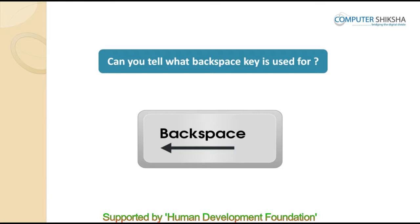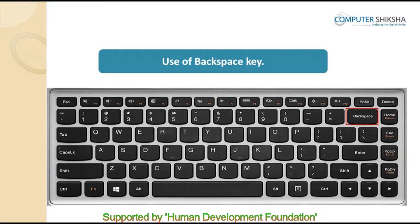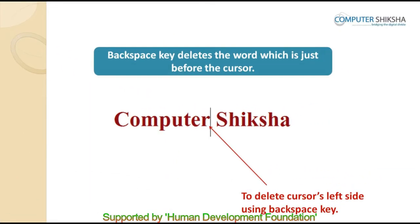Can you tell what the backspace key is used for while typing? The backspace key is used to erase or delete anything that we have typed by mistake. While typing a sentence, we all tend to make some mistake. To erase a wrongly typed word or alphabet, we keep our cursor such that the mistaken word is on the left side of the cursor, and then by pressing backspace we can easily erase the word.